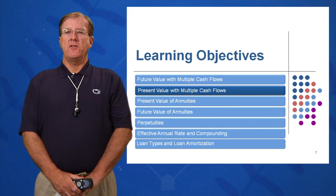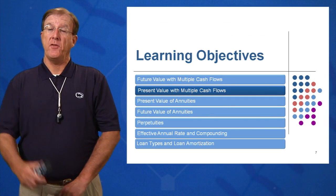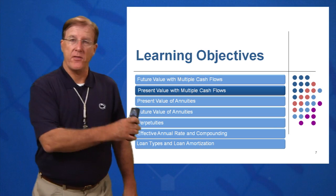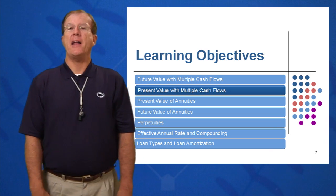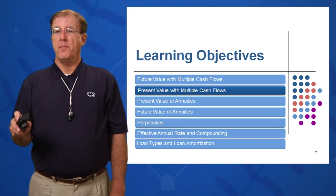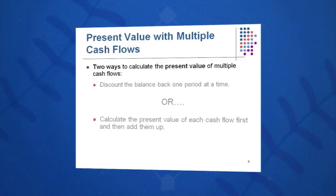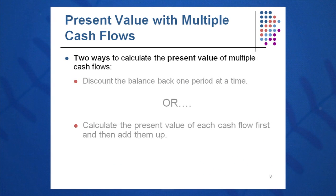The second learning objective in session six is how to calculate present value — how to discount these values back to the left in these examples. There are two ways to do it: you can discount the balance back one period at a time, or calculate the present value of each cash flow and then add them up.